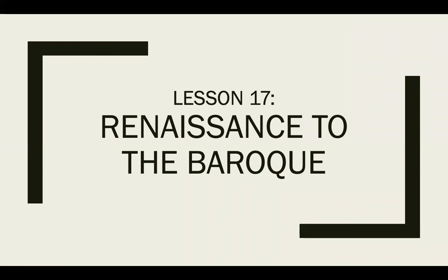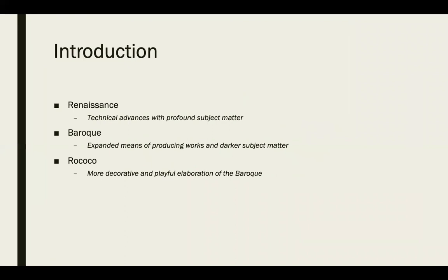This is lesson 17: Renaissance to the Baroque period. This chapter is broken down into three main parts — mostly the Renaissance, with some discussion of the Baroque period and Rococo as well. The Renaissance comes first, then Baroque, then Rococo. The Renaissance has a lot of technical advances and profound subject matter. The Baroque expanded the means of producing works with darker subject matter, and Rococo is similar but much more decorative and playful.